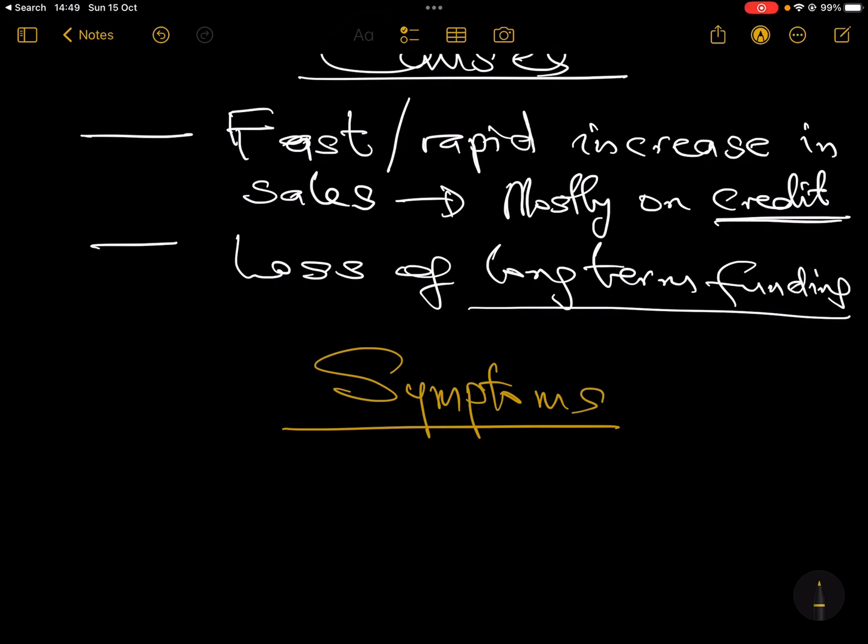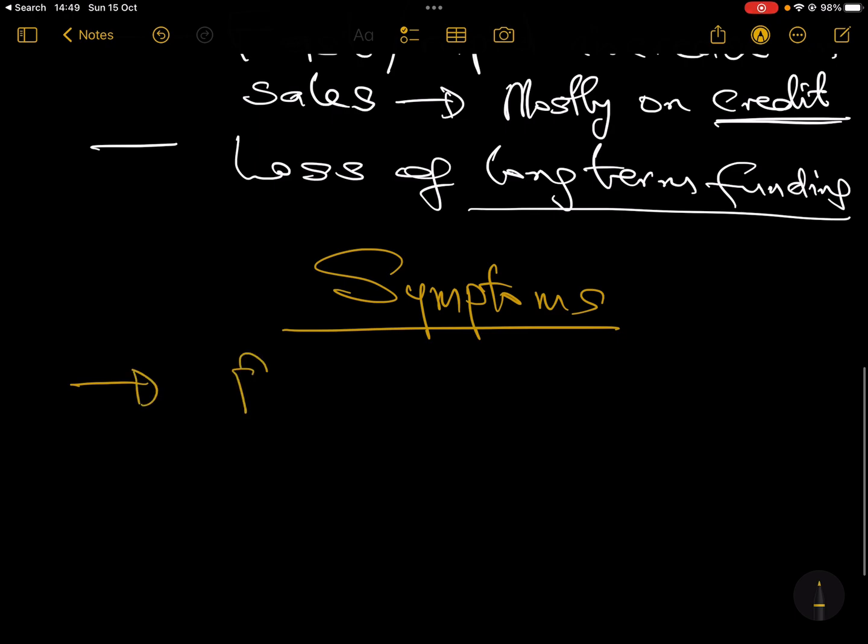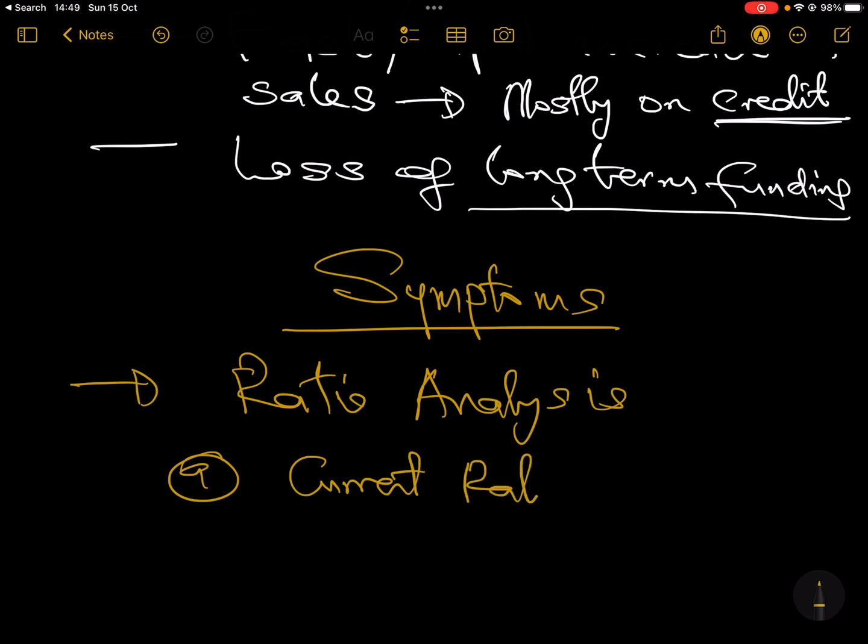Now let's look at what are the symptoms. Because in exams you must be able to conclude whether a particular company is over trading or not. That is actually the most common way of testing this part. You're going to be given a financial statement and the examiner is going to ask you that you need to conclude whether the company is over trading, and if so, what are the solutions. That's a basic exam question. So how do you know that a company is over trading? Usually what you do is you use some ratio analysis to determine that.